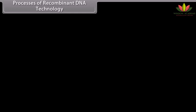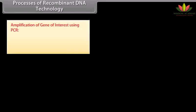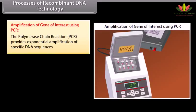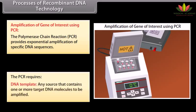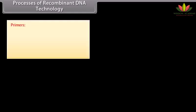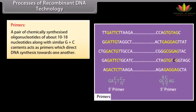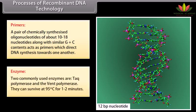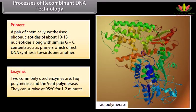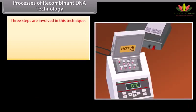Amplification of gene of interest using PCR. The polymerase chain reaction (PCR) provides exponential amplification of specific DNA sequences. PCR requires: a DNA template — any source that contains one or more target DNA molecules to be amplified; primers — a pair of chemically synthesized oligonucleotides of about 10 to 80 nucleotides with similar G plus C contents that act as primers and direct DNA synthesis towards one another; and enzymes — two commonly used enzymes are Taq polymerase and Vent polymerase, which can survive at 95 degrees Celsius for one to two minutes.